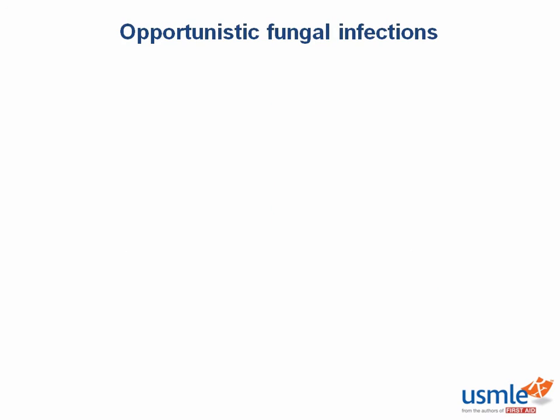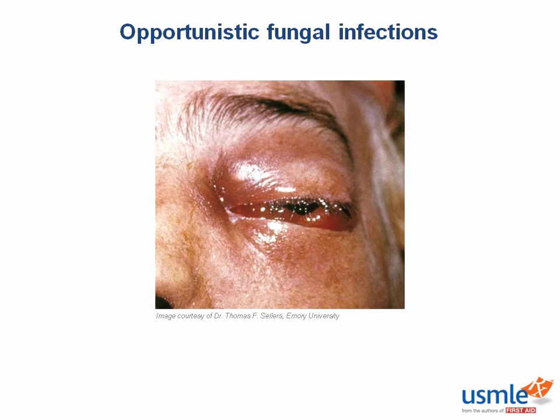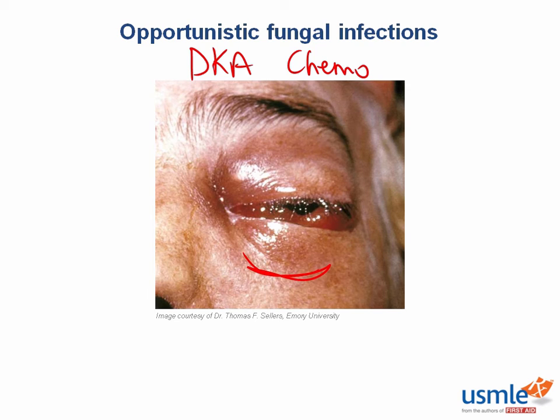Mucormycosis is a feared infection in immunocompromised patients. Typically you'll see a patient with diabetic ketoacidosis presenting with fever, headaches, and facial pain. Mucor most commonly affects the nasal cavity, proliferating within the sinuses and then entering blood vessels, or physically spreading through the cribriform plate into the brain or ocular cavity. On boards, expect a patient in DKA or on chemotherapy with cranial nerve deficits, facial or eye edema, reproducible cranial neuropathy, and necrotic-appearing nasal mucosa.